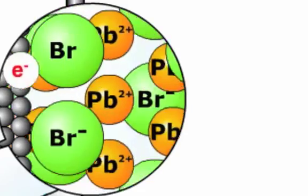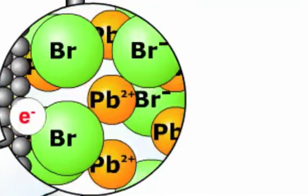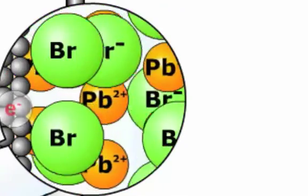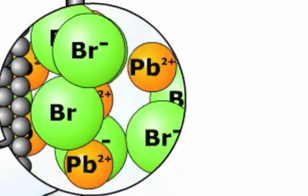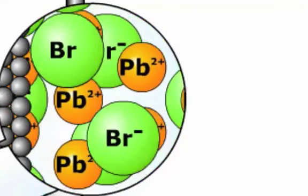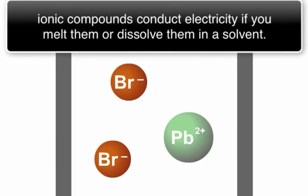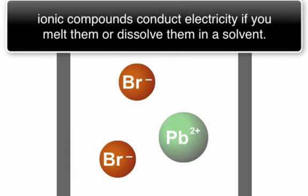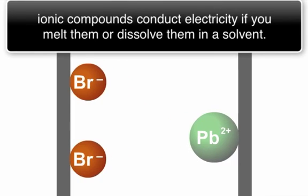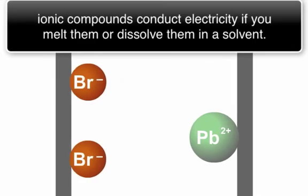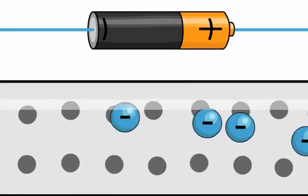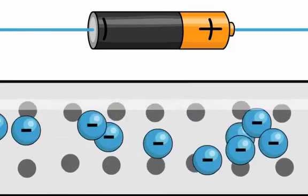However, if you find some way of breaking that lattice down, and allowing the charged particles to move, then ionic structures will conduct electricity. So, if you melt them, or if you dissolve them, then ionic compounds will conduct electricity, because then the charged ions are free to move, and if we get a flow of charge, that's electricity.